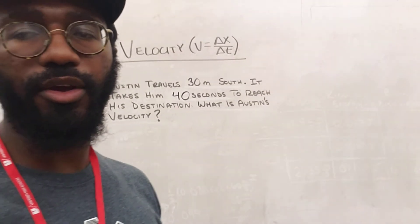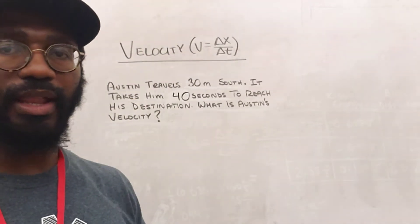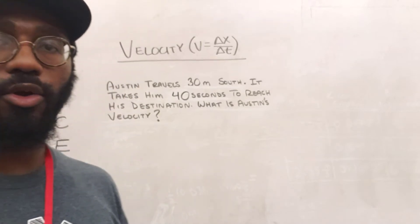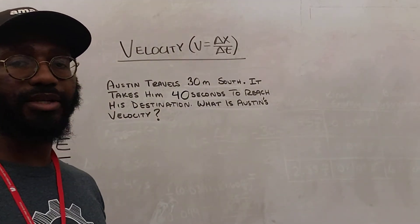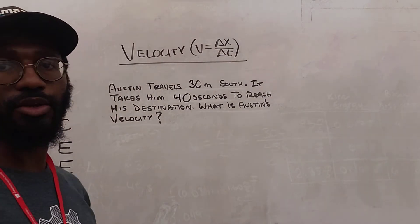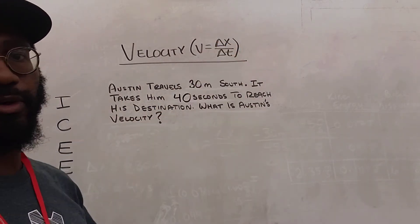Hey, how's it going? It's Mr. Farrell here with a quick physics tutorial on velocity. We're going to solve a word problem using the velocity equation in the form of v equals delta x over delta t, displacement over time.